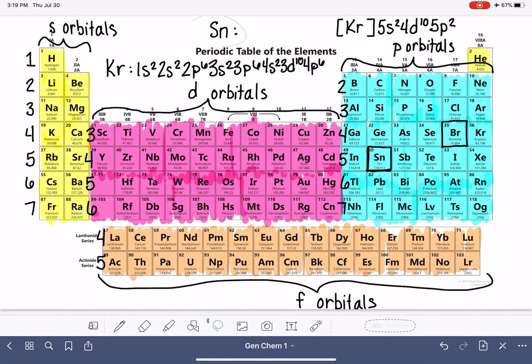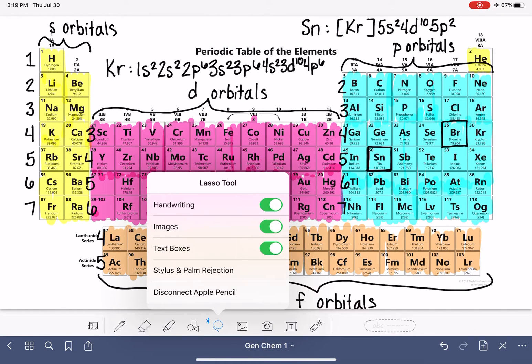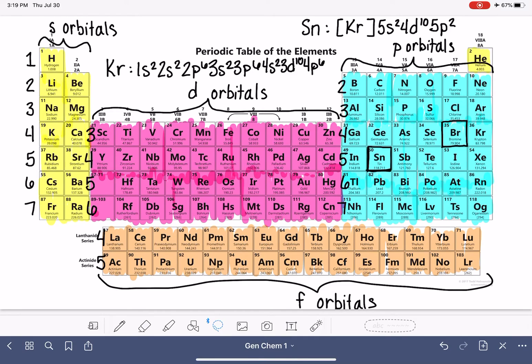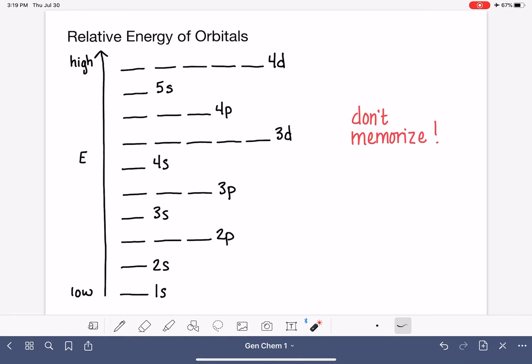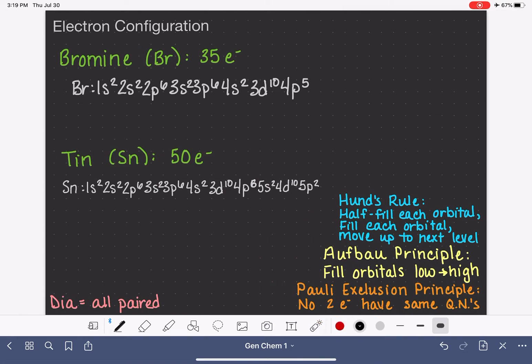And now we've got our tin noble gas, or excuse me, electron configuration. We have that really nice and condensed and super shorthanded down into something that is really small. So let's go back and let's write that in as our electron configuration for tin.